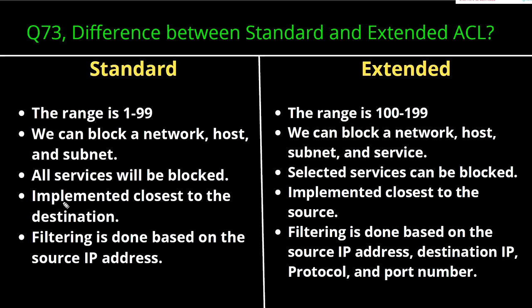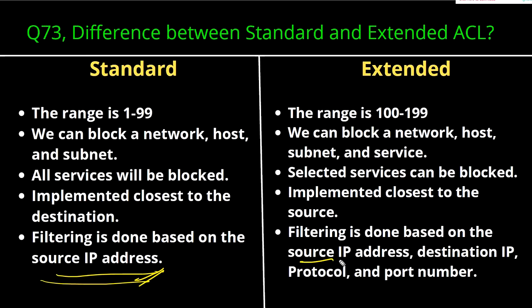The last difference: in a standard ACL, filtering is done based on source IP address only. The router will not check the destination — only the source IP address. But in extended ACL, filtering is done based on source IP address, destination IP address, protocol, as well as port number. So you have a lot more filtering options in extended ACL.